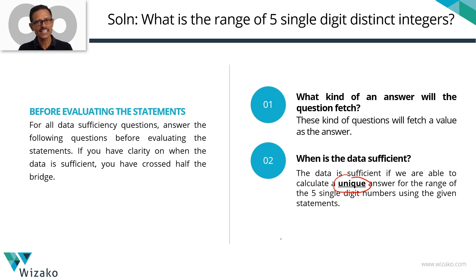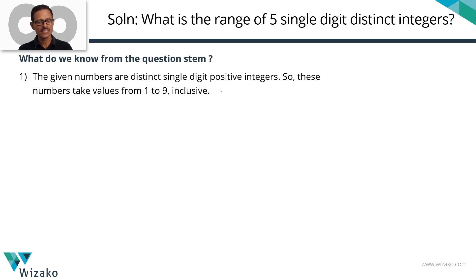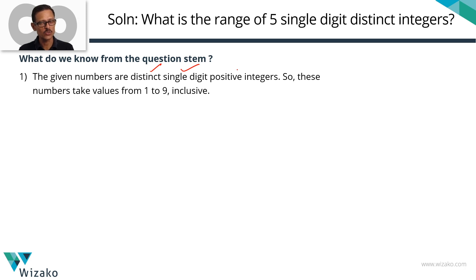Let's jot down key points from the question stem before we look at statement 1. These are five distinct single-digit positive integers, which means the numbers take values from 1 to 9 inclusive and are unique, distinct, different values.